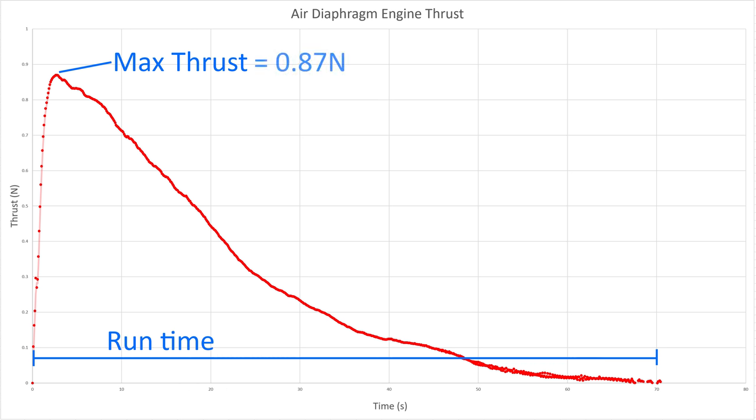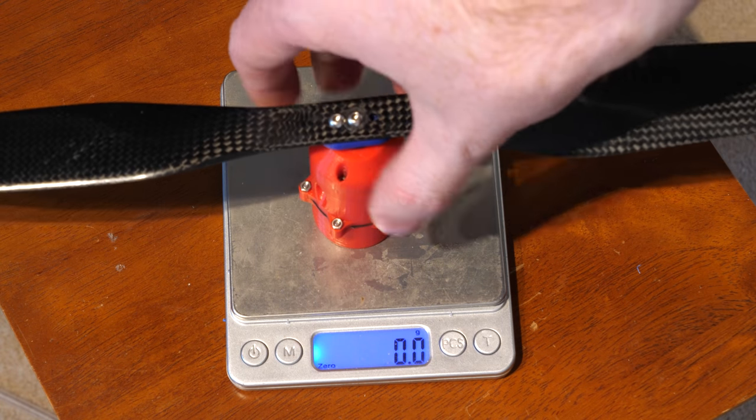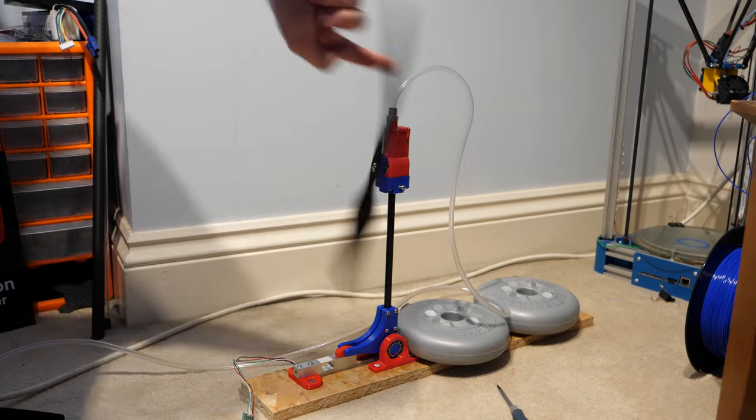With a peak thrust of roughly 0.87 newtons, or equivalent to 88 grams, it seems reasonable, as the engine weighs just 72 grams. But how does this compare to my old engine?